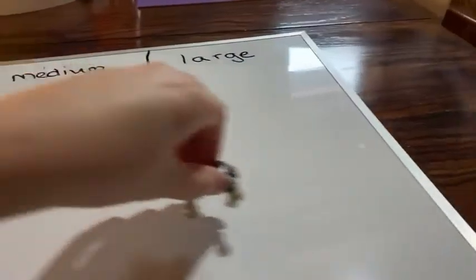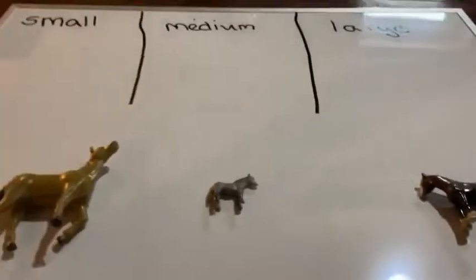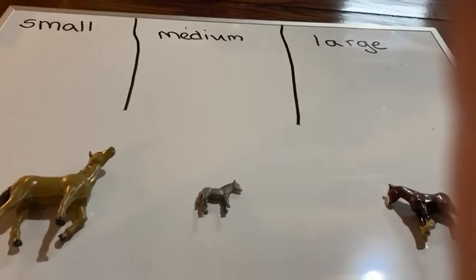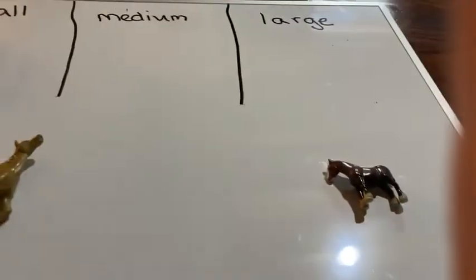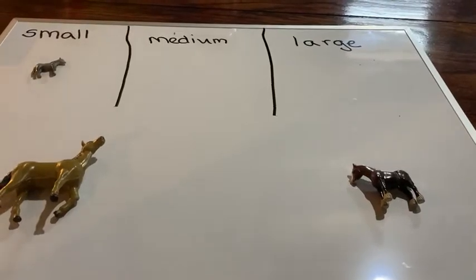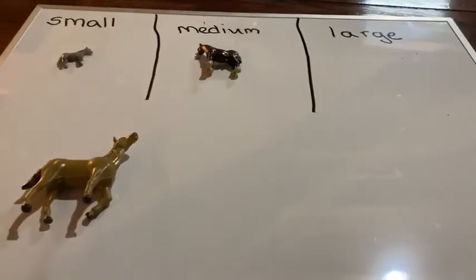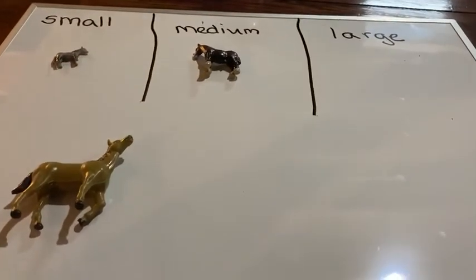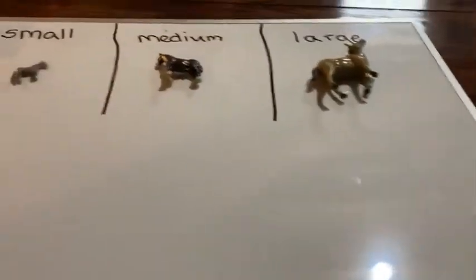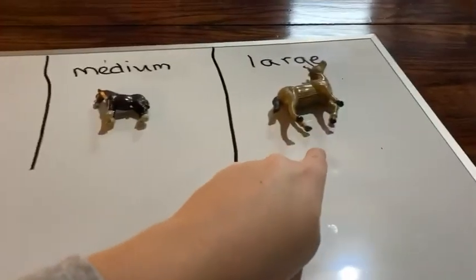Let's look at our horses. Which one of our horses is small? Small. Which one of our horses is medium? Medium. And which one of our horses is large? Large. Small. Medium. Large.